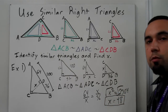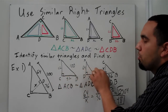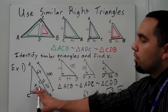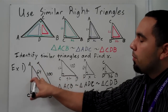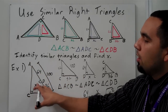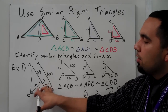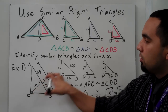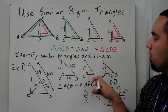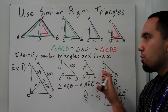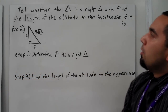Some of these are going to work out real nice like this one did. The hardest part is always setting up your triangles in the right order. Remember, you have three triangles: a big triangle, a medium-sized triangle, and a small triangle. The altitude that you draw will always be the short leg for the medium-sized triangle and always be the long leg of the small triangle.